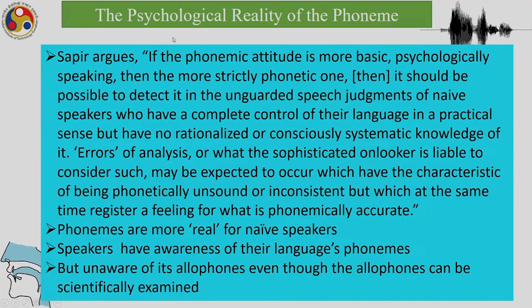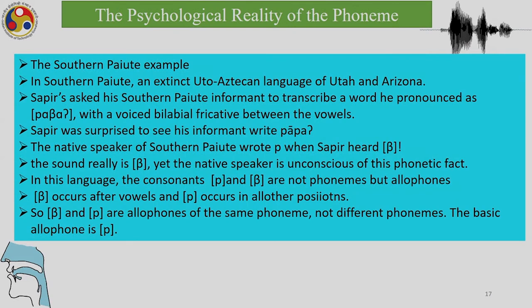Sapir argues that if the phoneme attitude is more basic psychologically than the strictly phonetic one, it should be possible to detect it in the unguarded speech judgments of native speakers — naive speakers who have complete practical control of their language but no systematized knowledge of it. Errors of analysis may occur which are phonetically unsound or inconsistent but register a feeling for what is phonemically accurate. In other words, phonemes are more real for linguistically untrained speakers: speakers have awareness of their language's phonemes but are unaware of its allophones, even though allophones can be scientifically examined.